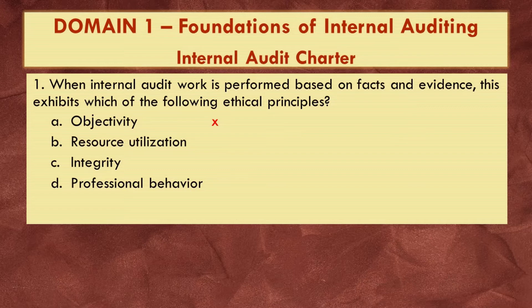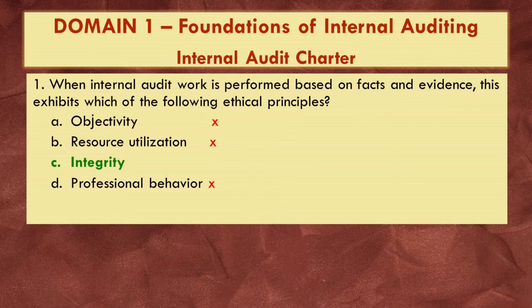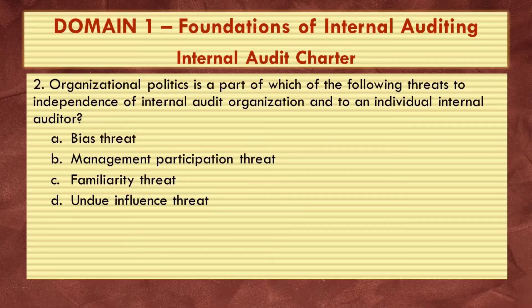Objectivity is incorrect — objectivity is based on performing credible audit work that is fair and neutral. Resource utilization is also incorrect — it deals with handling sensitive and confidential information responsibly. Professional behavior deals with abiding by professional standards when performing audit work, also incorrect. The answer is C, Integrity, because integrity means acting the same way whether no one is watching or everyone is watching — determining conclusions based on facts and evidence, not opinions and biases.